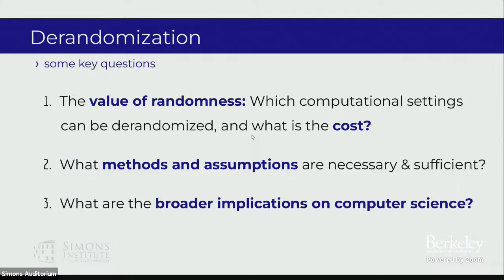The second question is: how can we derandomize things? The classical answer is pseudorandom generators, and Lydia talked about new non-black-box approaches. Which other methods are there, and what can they teach us about problems we don't yet understand? To prove that the methods work, we need to make assumptions. The classical ones for pseudorandom generators were circuit lower bounds. New methods have weaker assumptions — which assumptions are necessary and sufficient for derandomization?